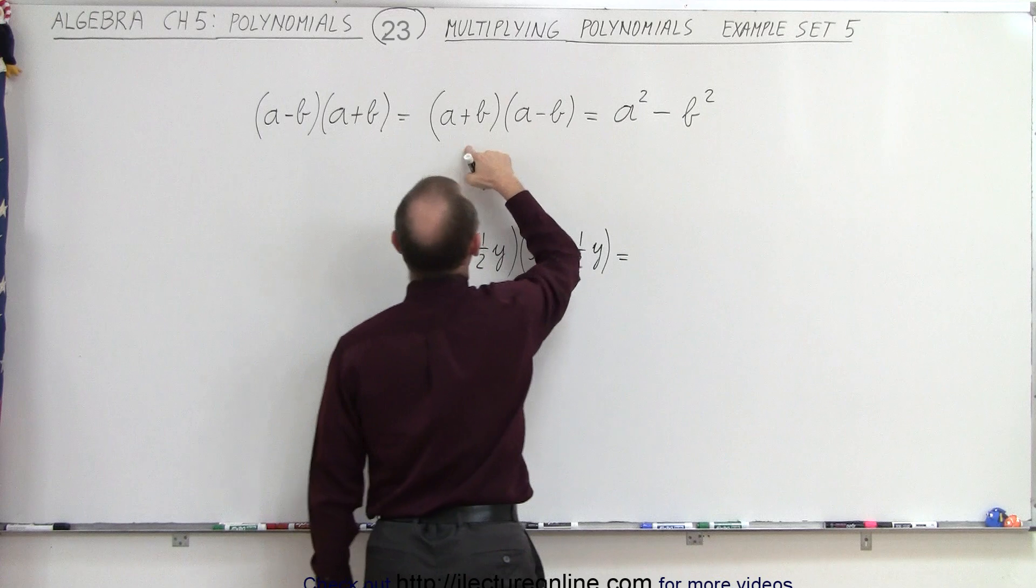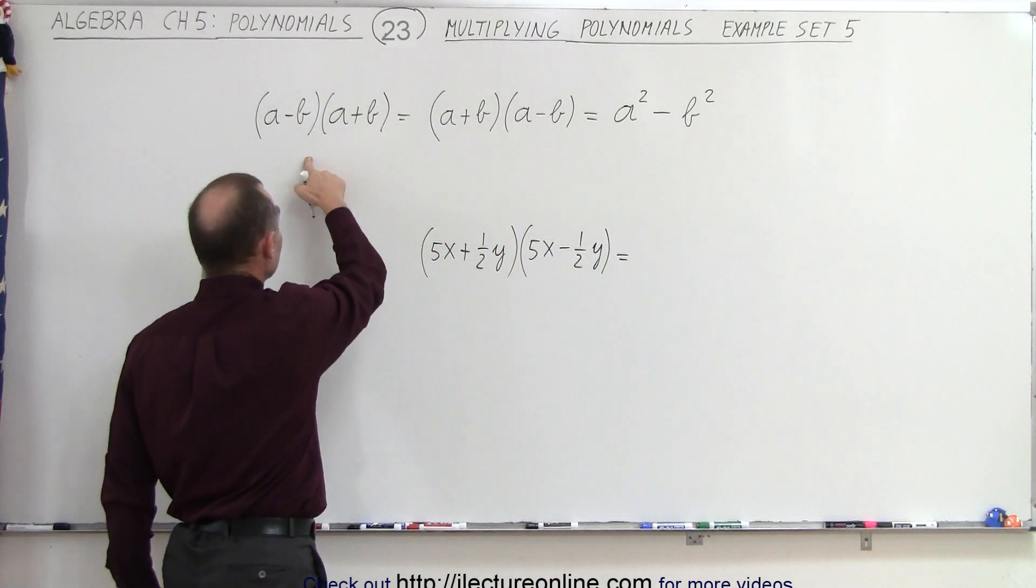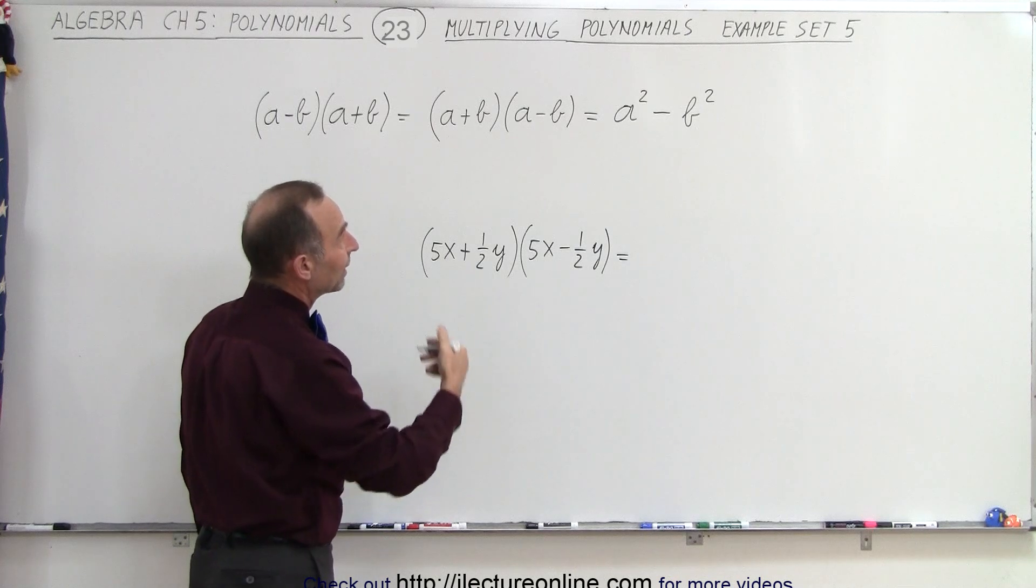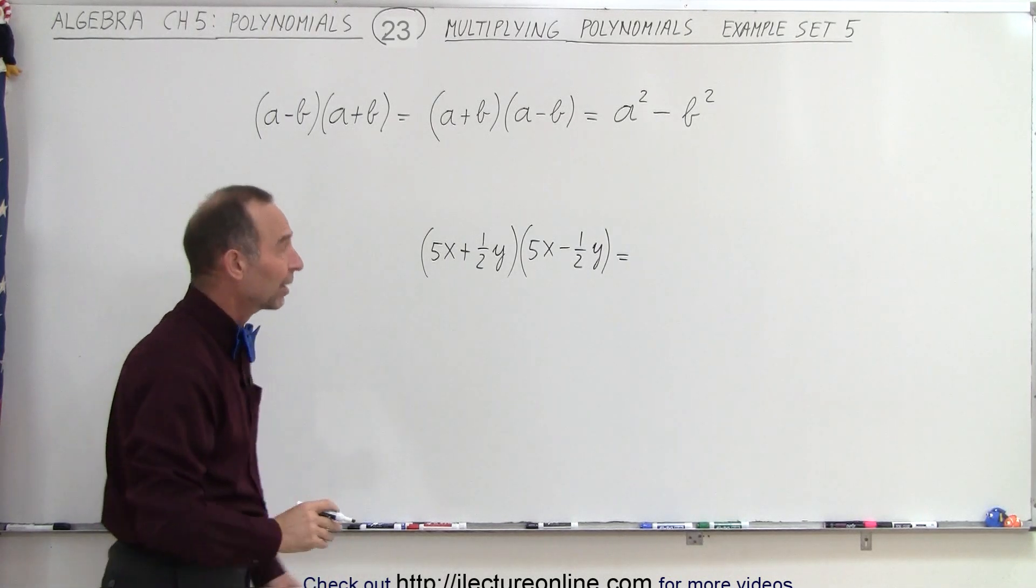So we have a plus b times a minus b, which is exactly the same as a minus b times a plus b, and you get a squared minus b squared, the first term squared minus the second term squared.